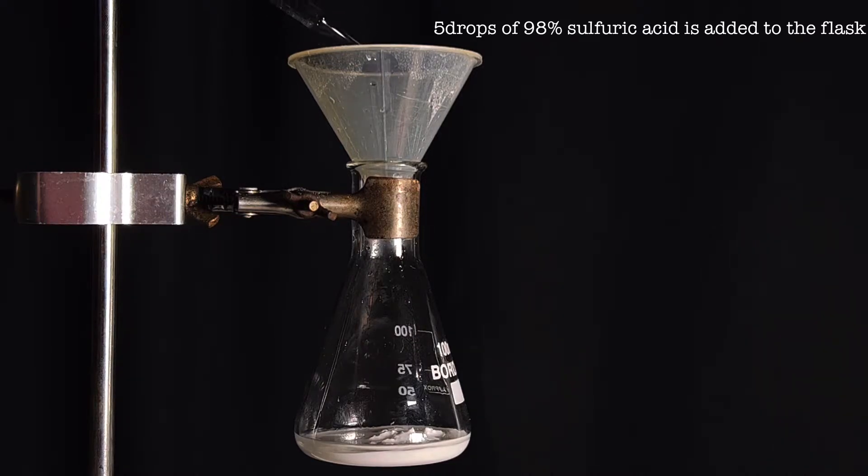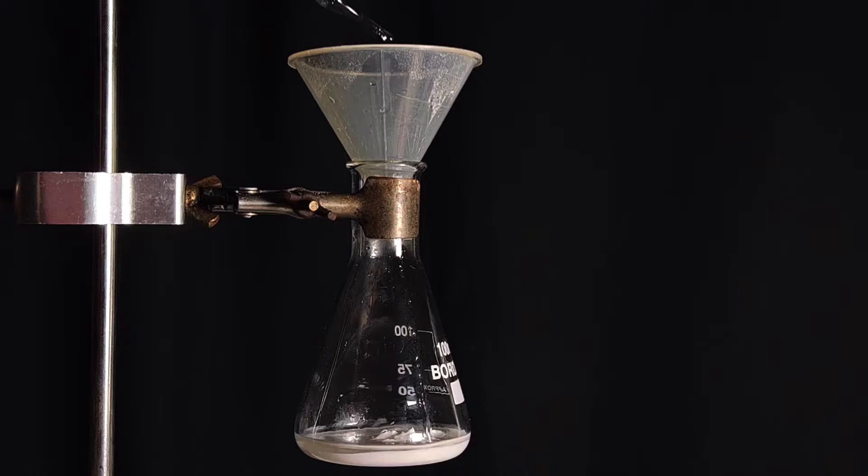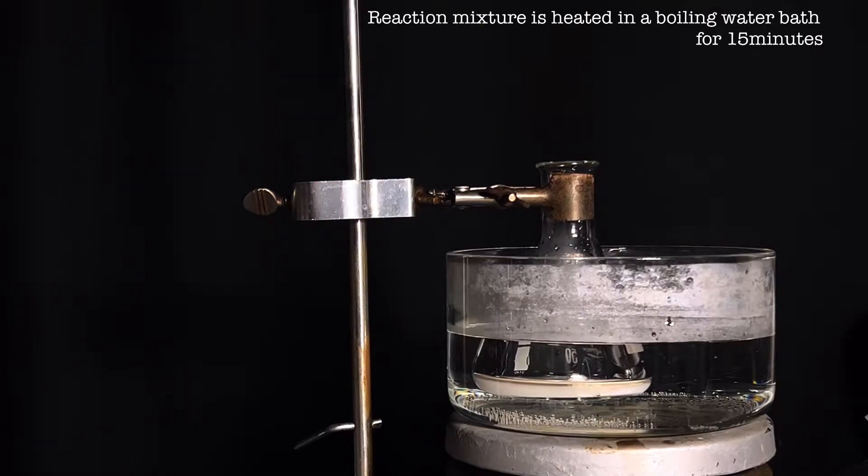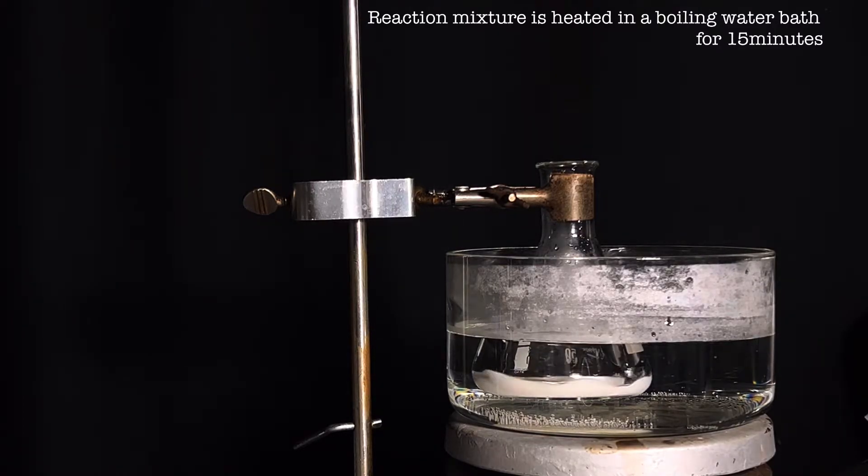The Erlenmeyer flask was then immersed in a boiling water bath and stirring was turned on. Within a minute all the solid present in the reaction mixture will dissolve and a clear solution is obtained.